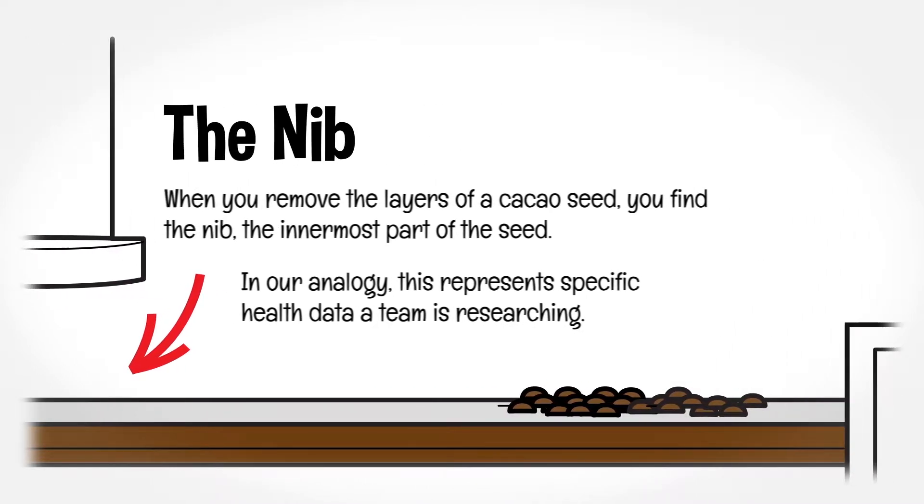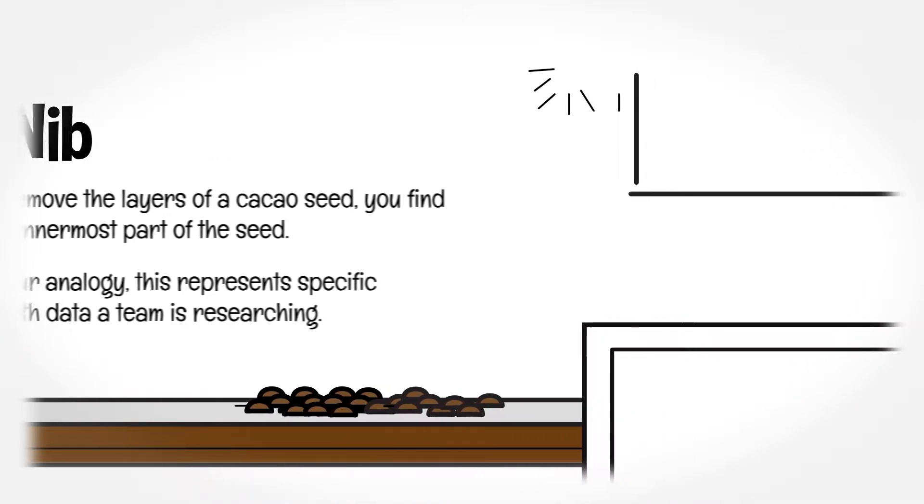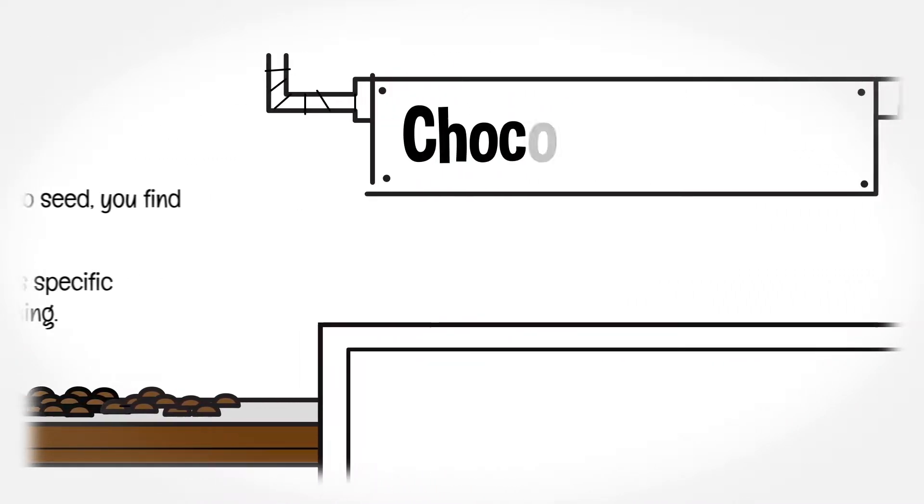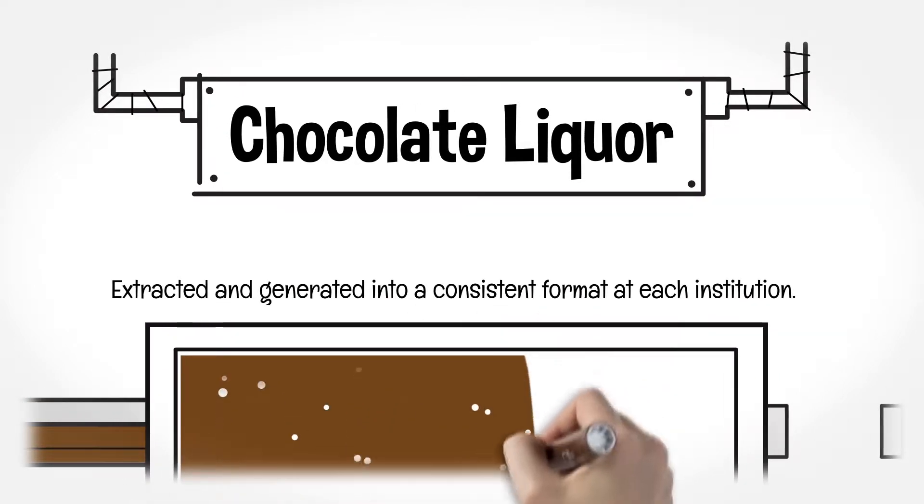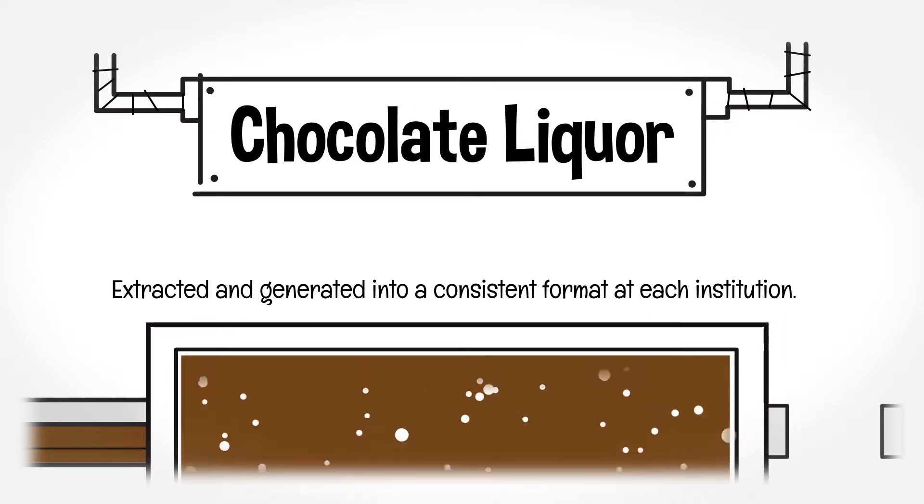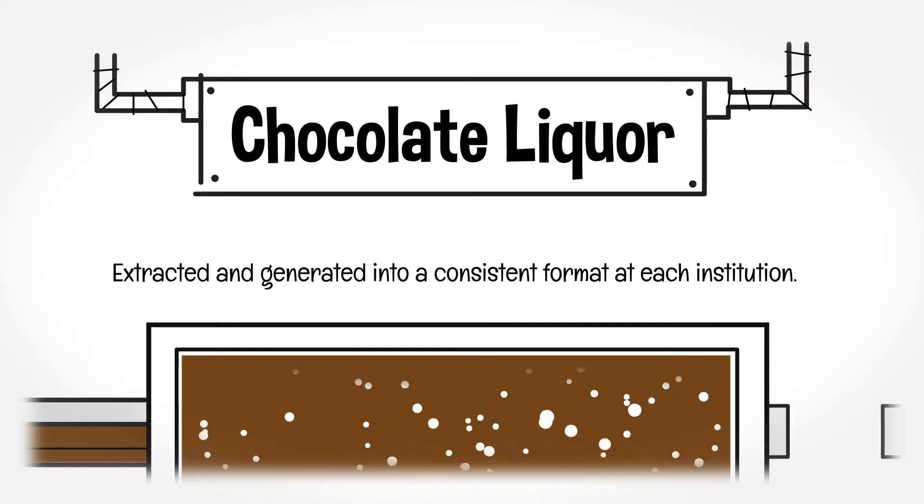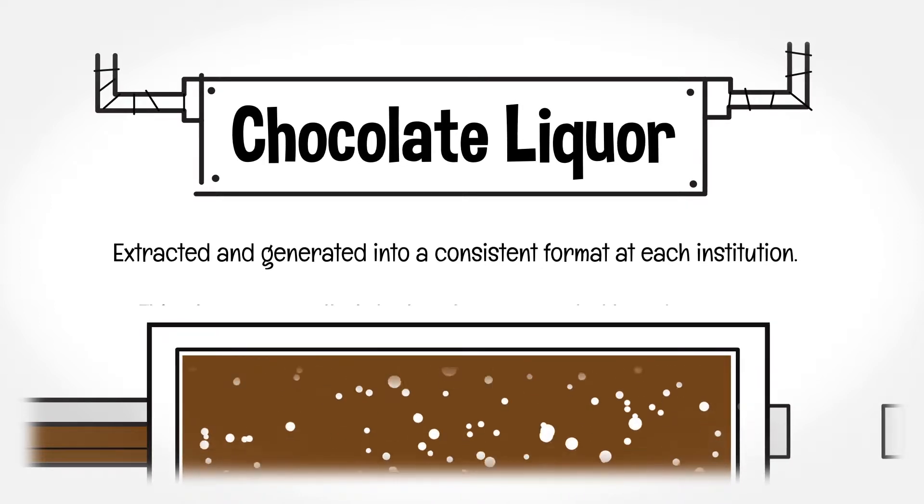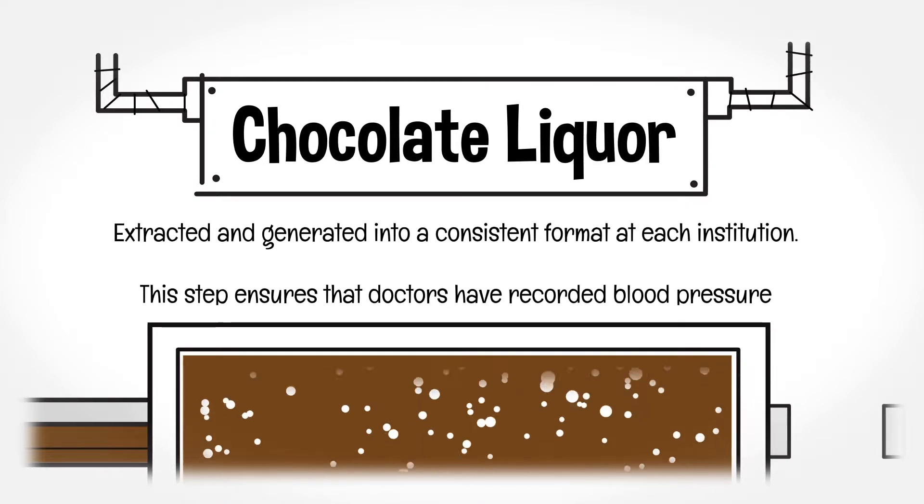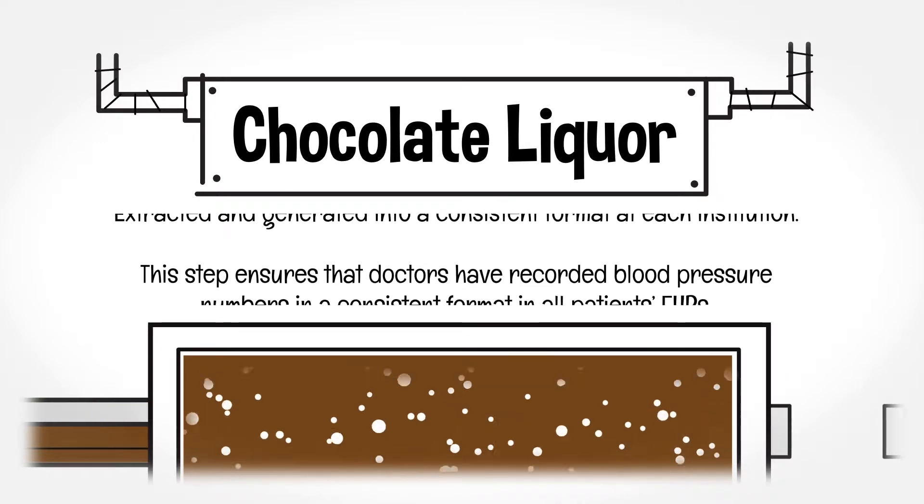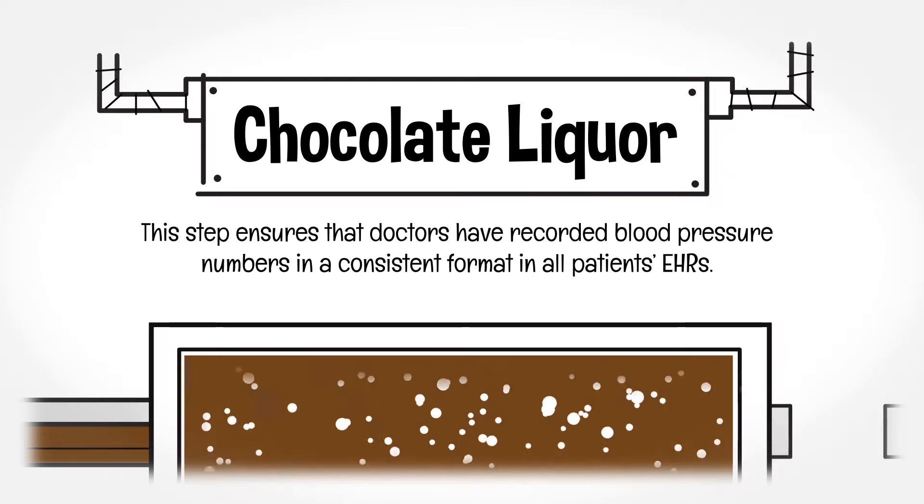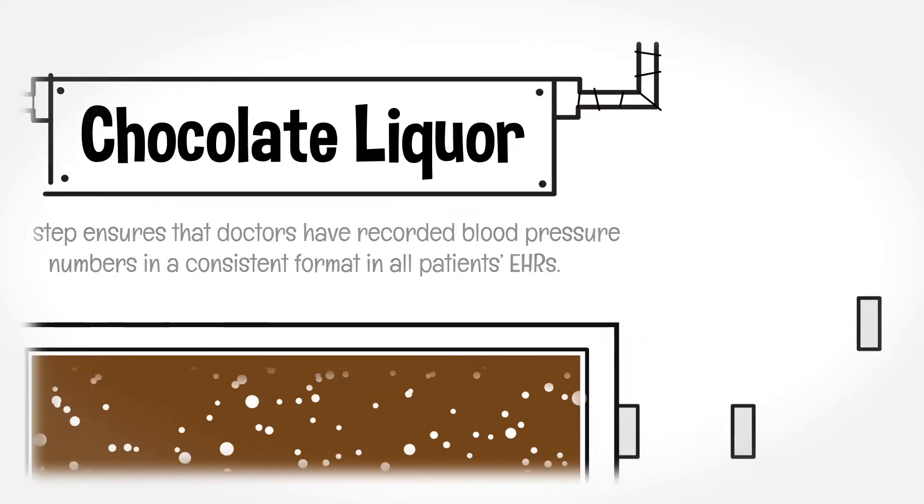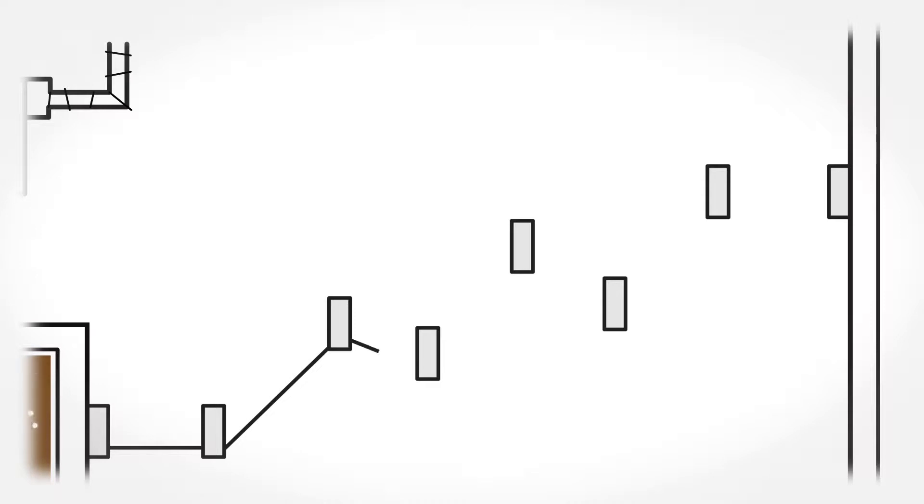Smooth chocolate liqueur is created by extracting and grinding the nib of each seed. Similarly, patient EHR data used for a research study is extracted and generated into a consistent format at each institution, so that all patient data is in a standard format using standard language. If researchers are studying hypertension, for example, this step ensures that doctors have recorded blood pressure numbers in a consistent format in all patients' EHRs.